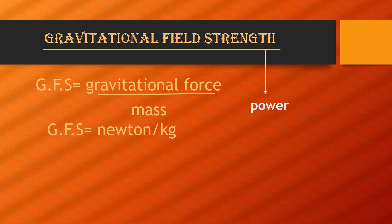There is a specific value for Gravitational Field Strength inside the surface of Earth, which is almost equal to the value of small g. You need to be clear that there is a very huge difference between capital G and small g. Capital G is the gravitational constant and small g is the gravitational acceleration. The particular value for gravitational field strength is equal to 10 Newton per kg, and it remains the same inside the boundary of Earth.